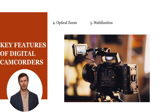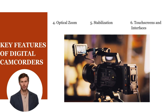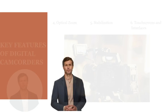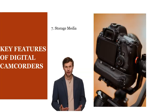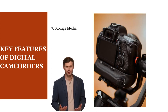Built-in image stabilization technology helps reduce camera shake and produce smoother video, especially when shooting handheld or in motion. Digital camcorders often feature touchscreen interfaces for easy navigation and control, and may also offer manual controls for settings like exposure, focus, and white balance. Digital camcorders use various types of storage media, such as built-in flash memory, SD cards, or other memory cards. Some models may also feature hard drives or solid-state drives.